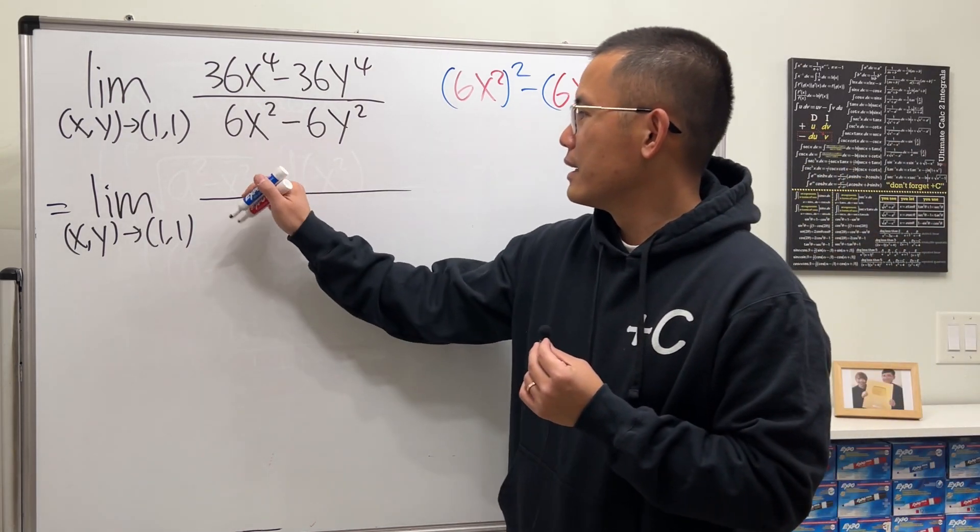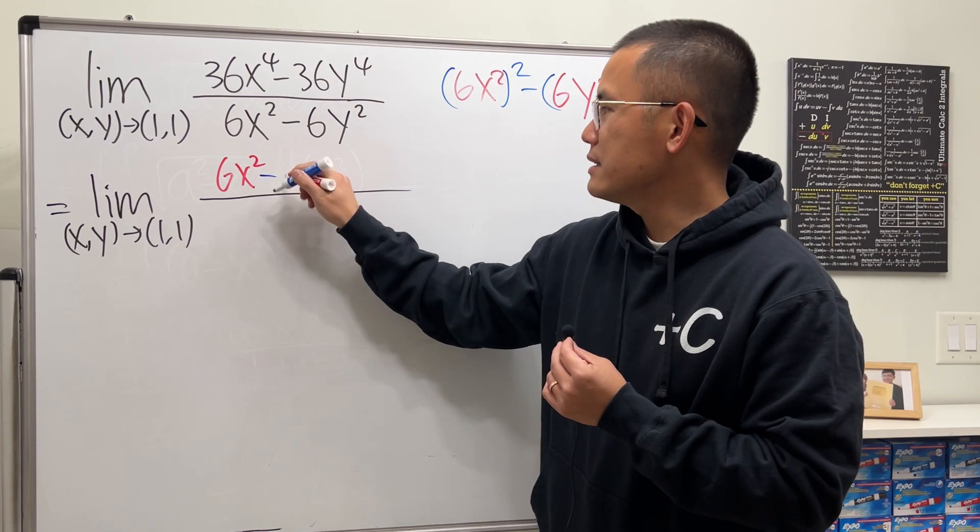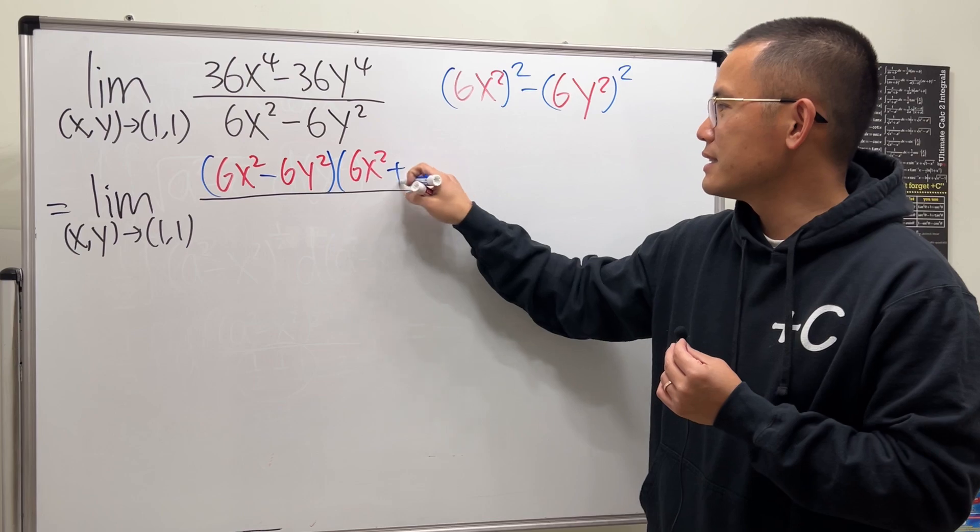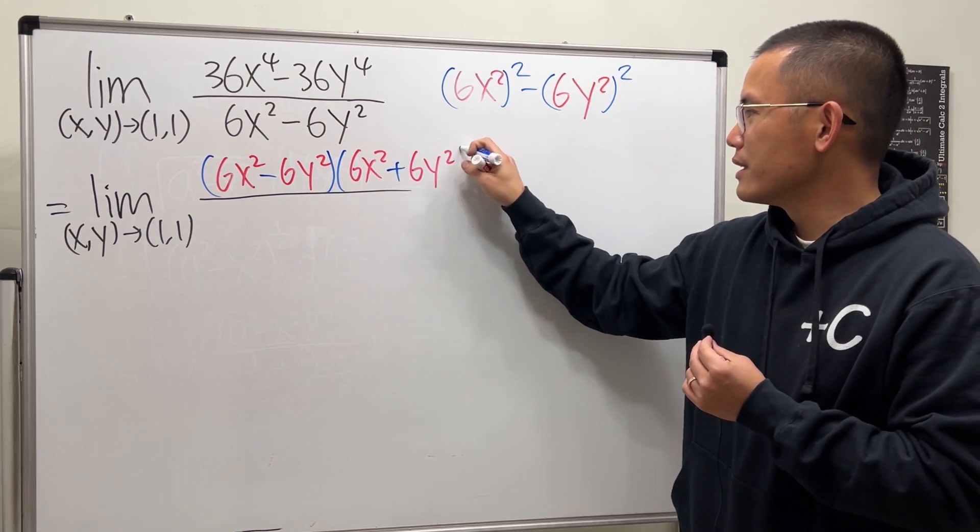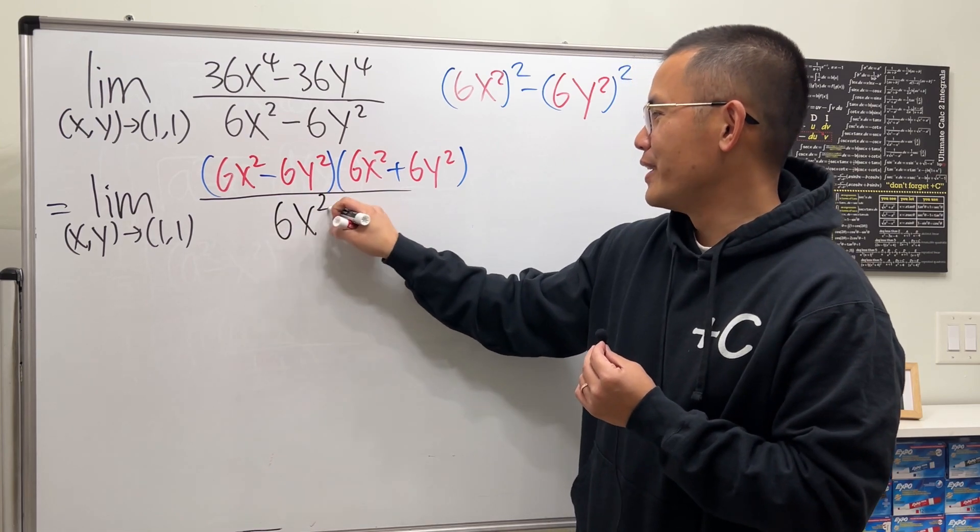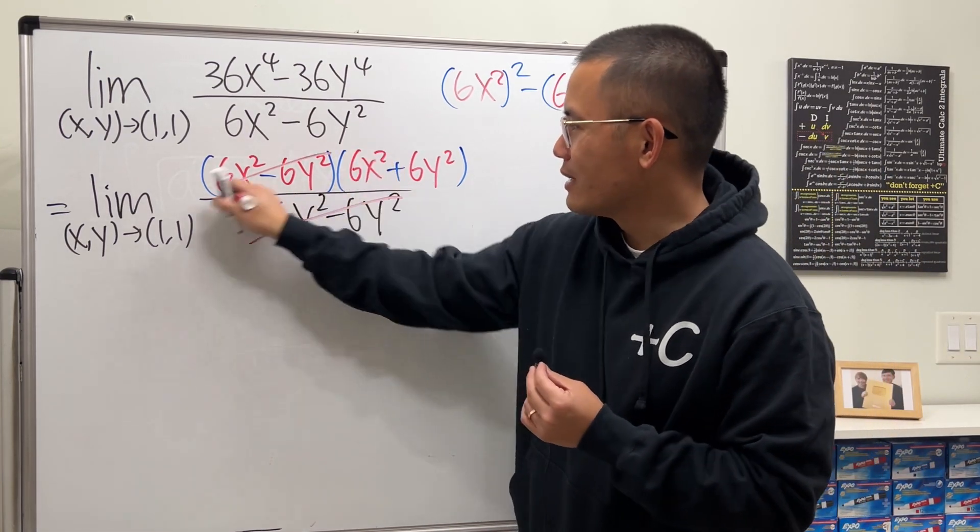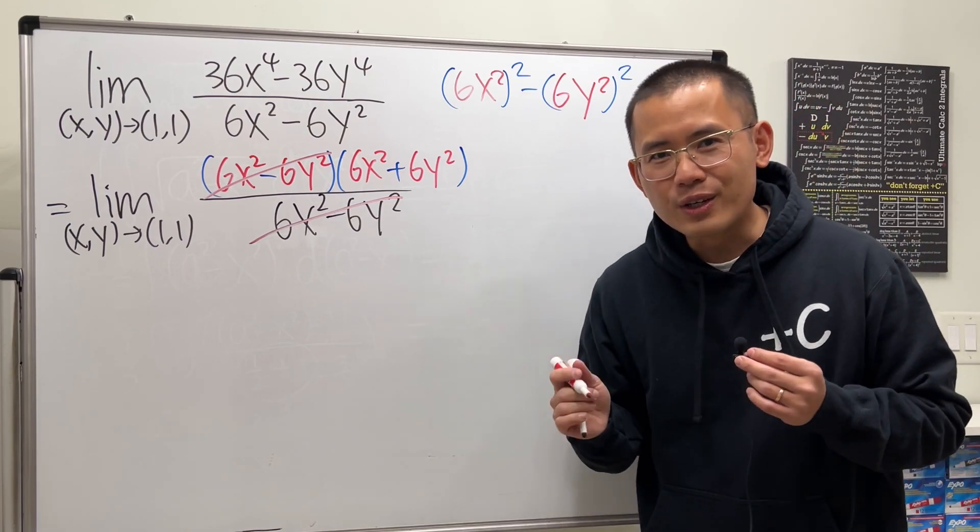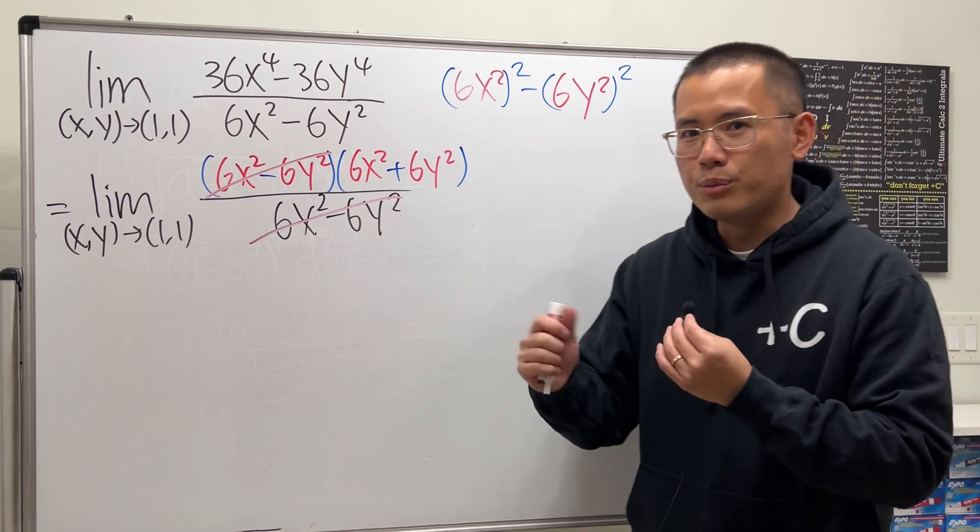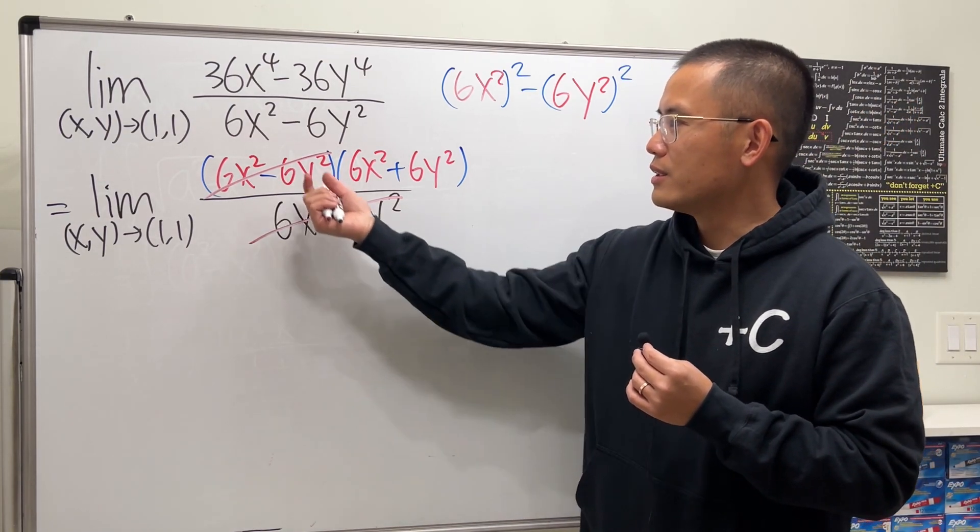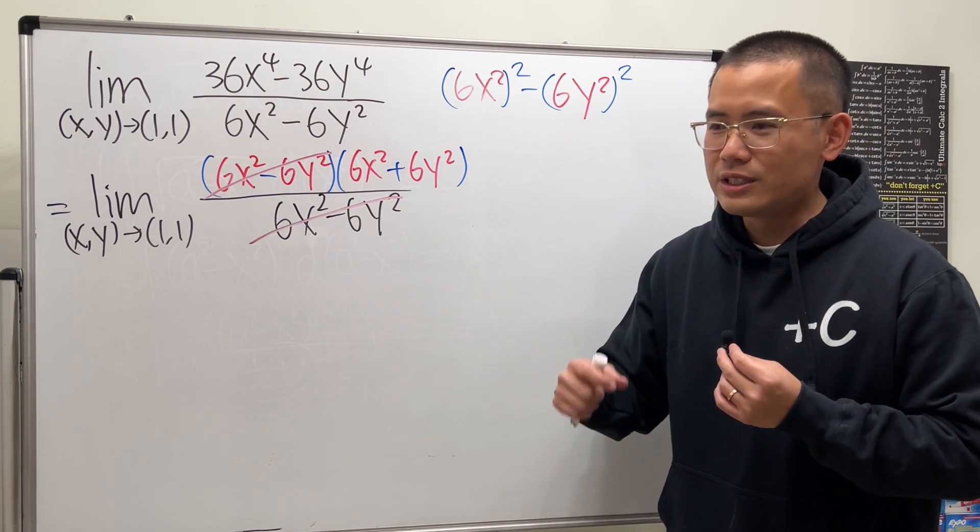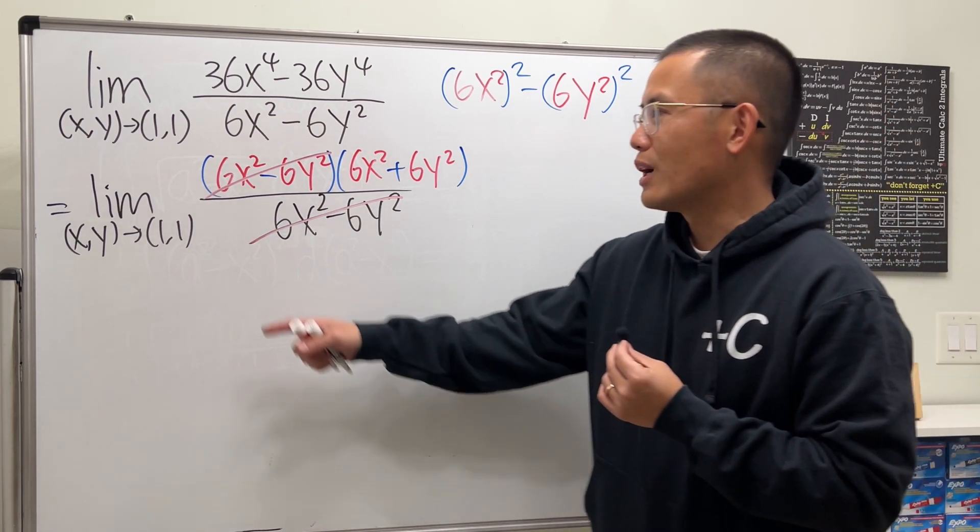If you look at the top like that, then you are going to get (6x² - 6y²) times (6x² + 6y²). And guess what? We happen to have the denominator here being 6x² - 6y², and cancel, cancel. Just like the good old Calc 1 days - seriously, if you can factor and cancel, you have removed the discontinuity, the 0/0 case. You have to remove the 0/0 case, the indeterminate form.